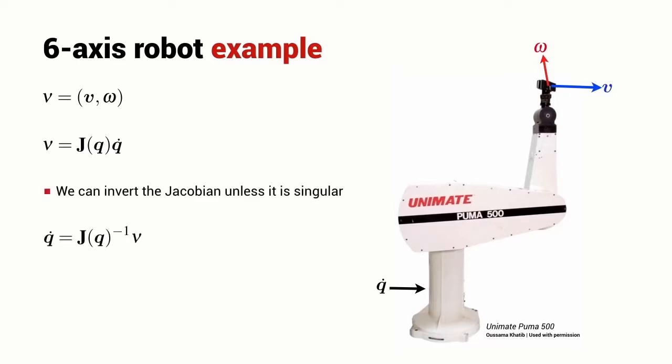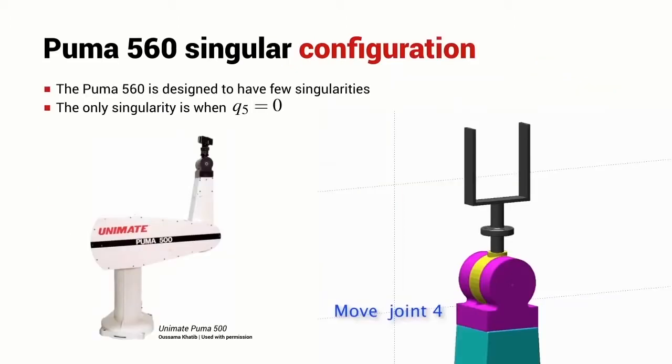And we can do this unless the Jacobian is singular, that is, its determinant is equal to zero. Unfortunately, there are some circumstances where the Jacobian will be singular, and one of those singularities occurs when joint angle five is equal to zero as shown here.